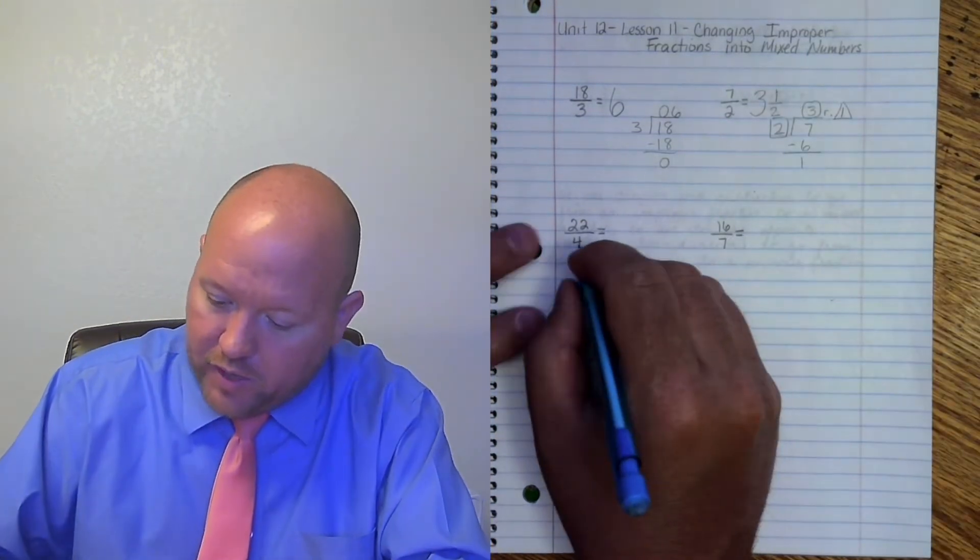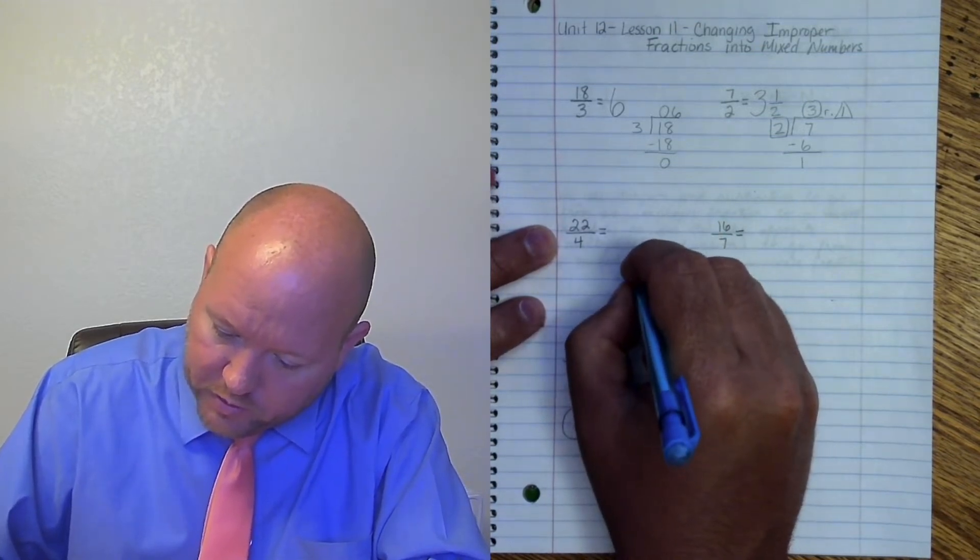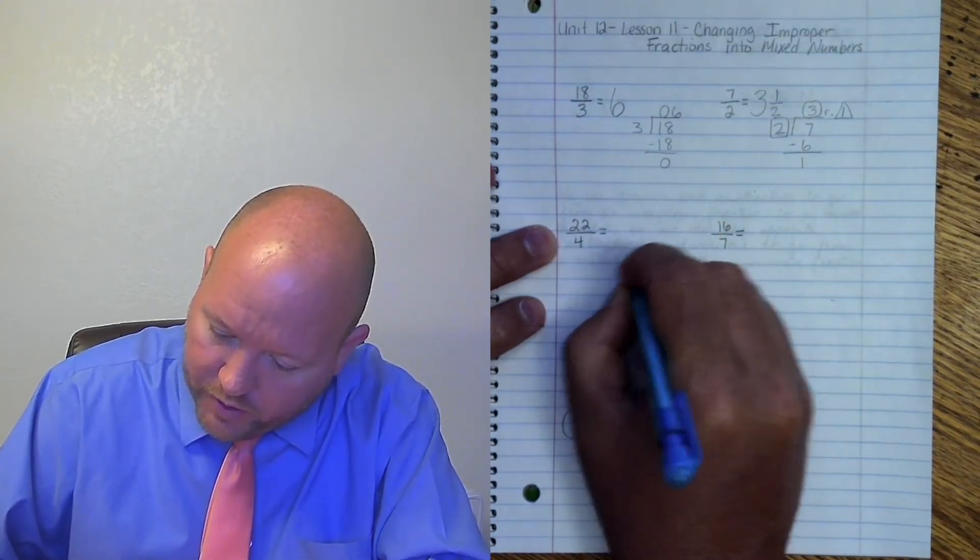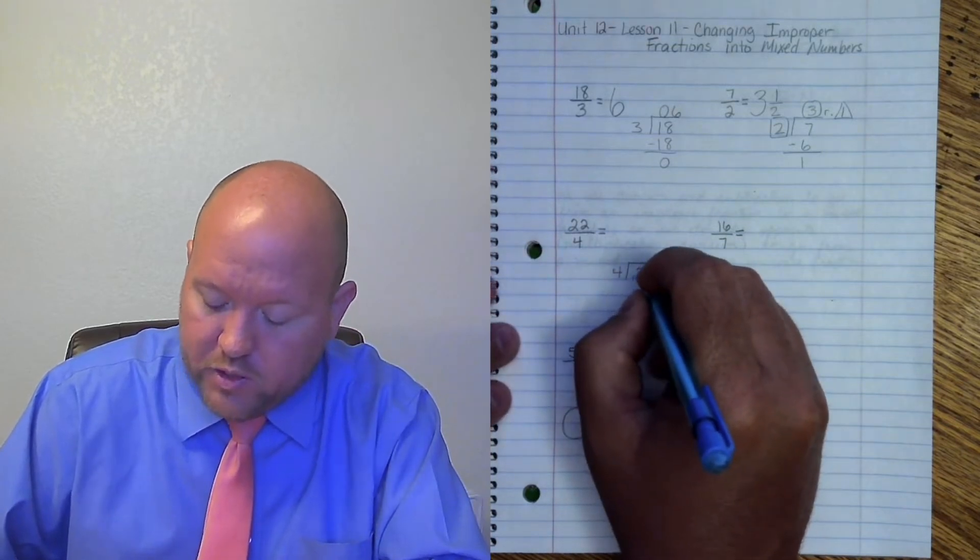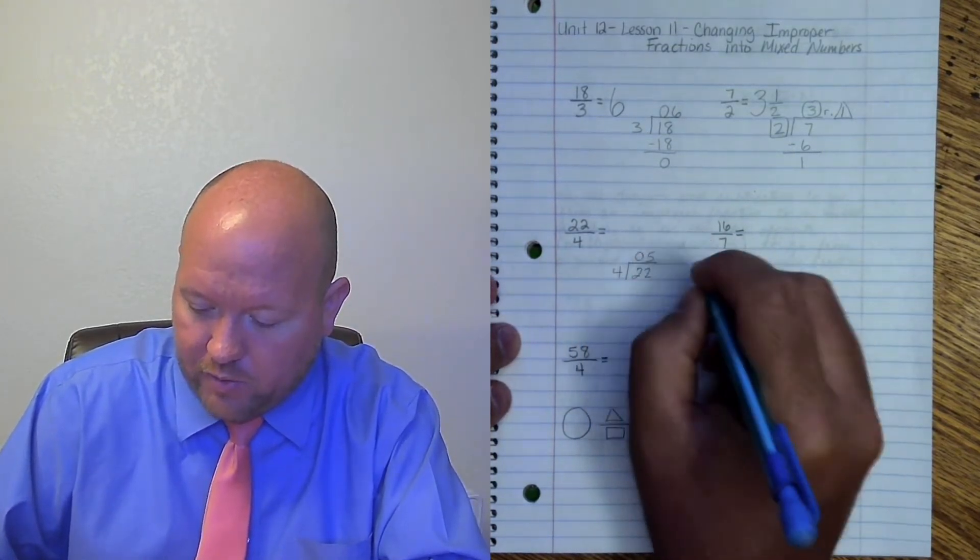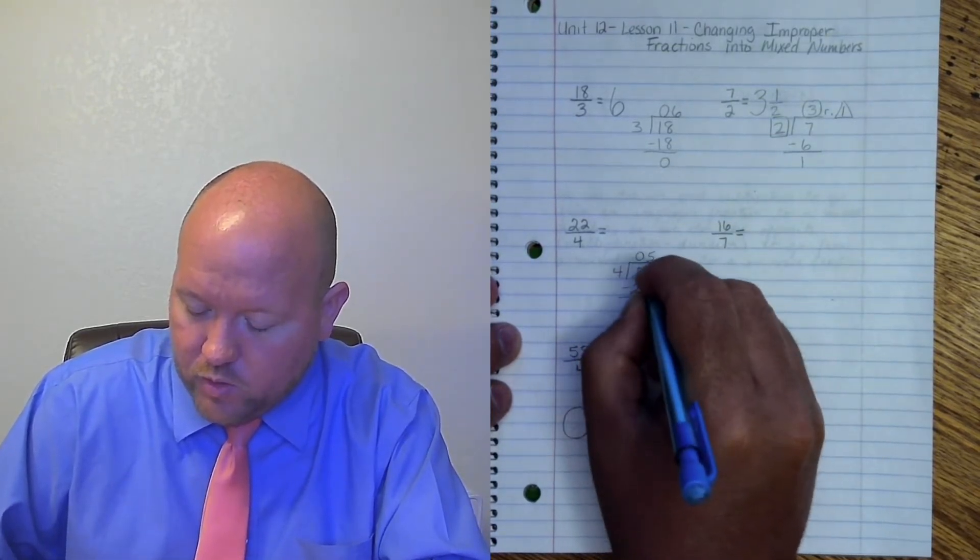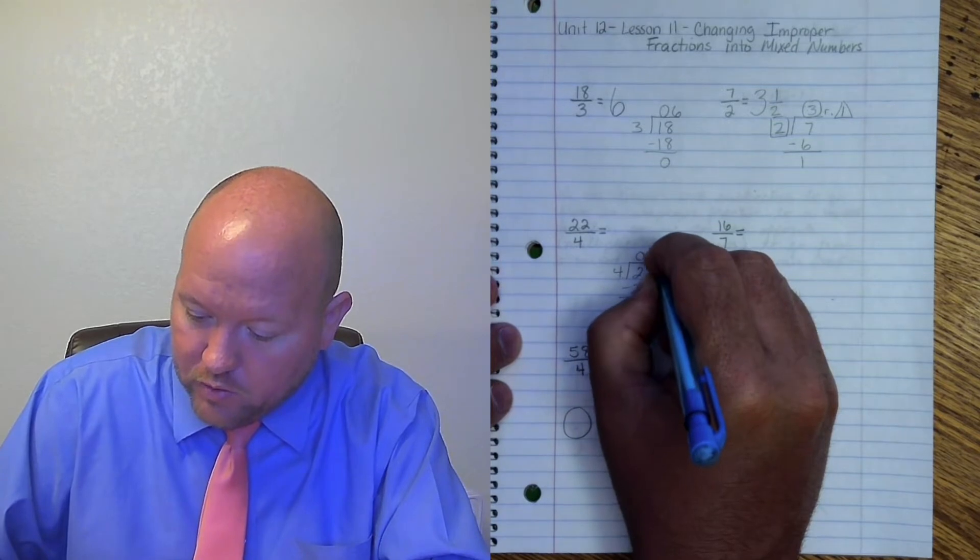Next we have 22 fourths. So that's going to be 22 divided by 4. 4 goes into 2 zero times. 4 goes into 22 five times. 5 times 4 is 20. 22 minus 20 is 2. Remainder 2.